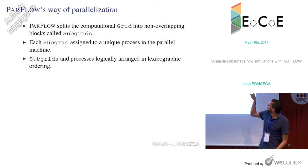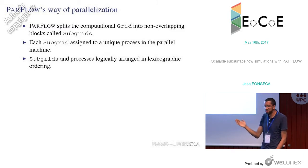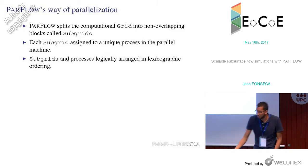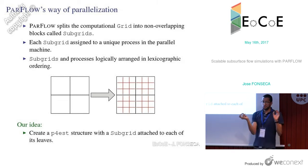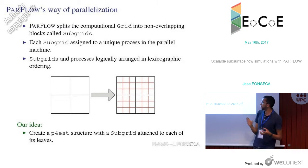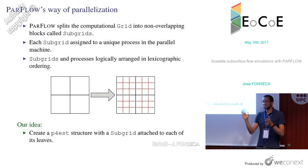This already reveals a problem: you need exactly as many processes as subgrids, which poses issues for the granularity of parallelization. Our idea is that in a P4est structure the mesh is represented by a tree, with each element being one portion of the mesh. We want to place one ParFlow subgrid structure in each leaf of the P4est tree, choosing the subgrid size so that the resulting mesh is similar to the original when the user does not want to use P4est.